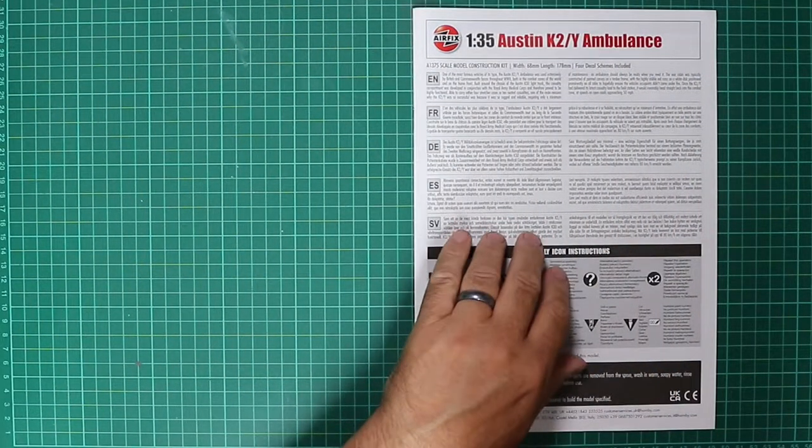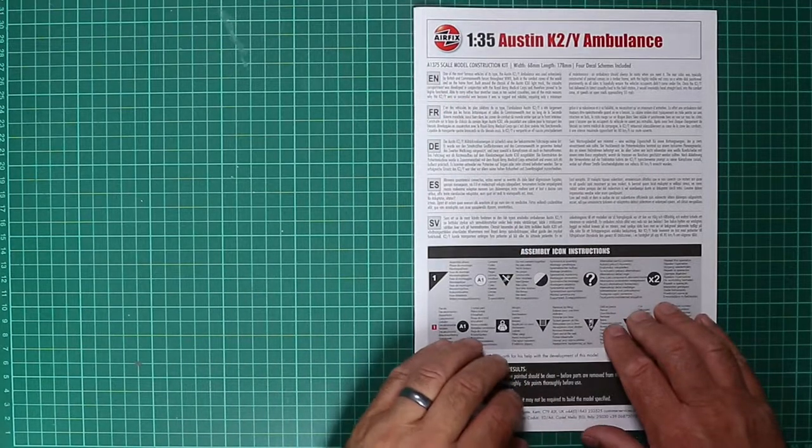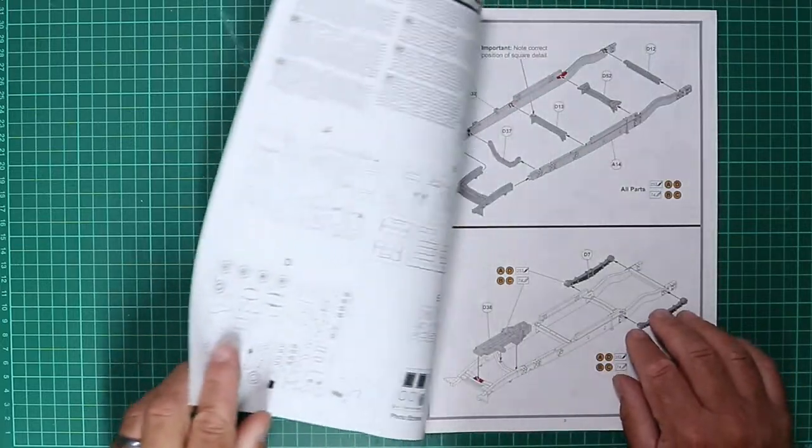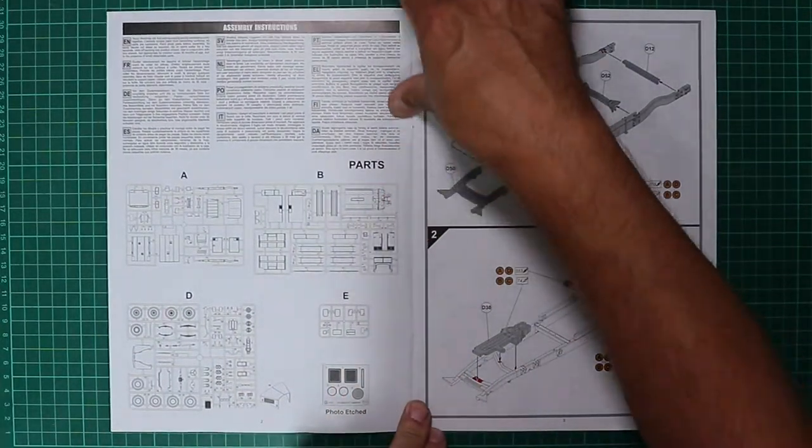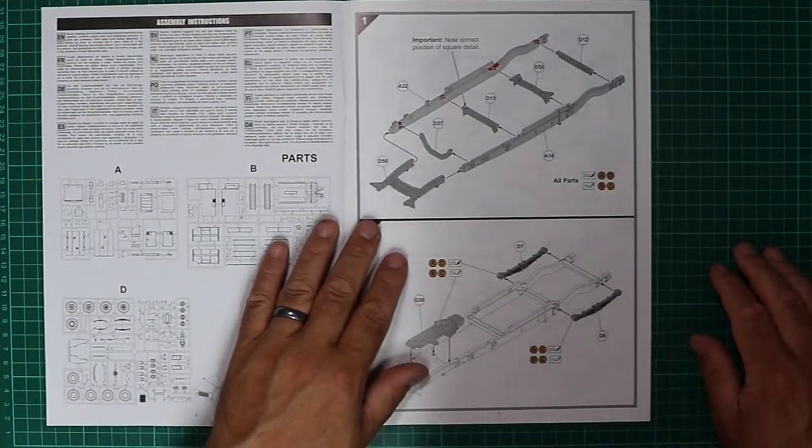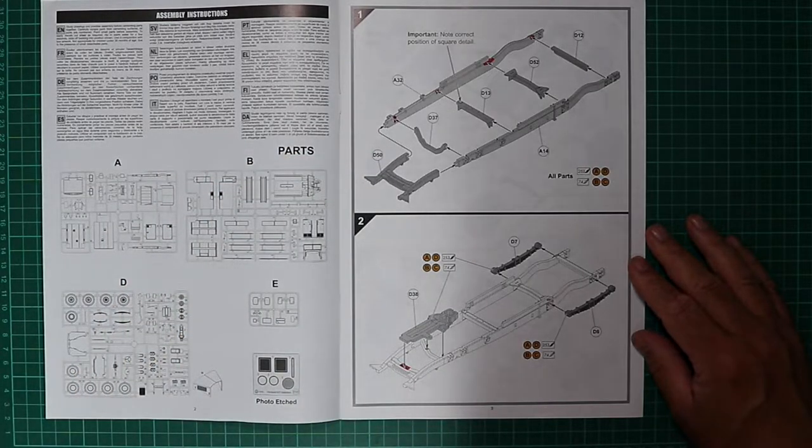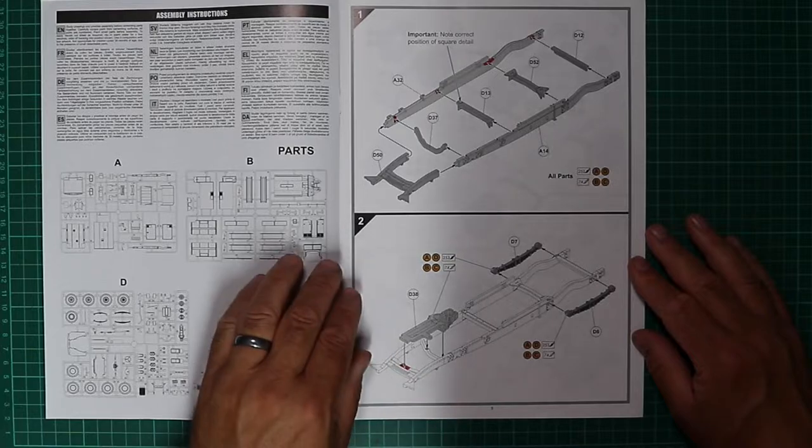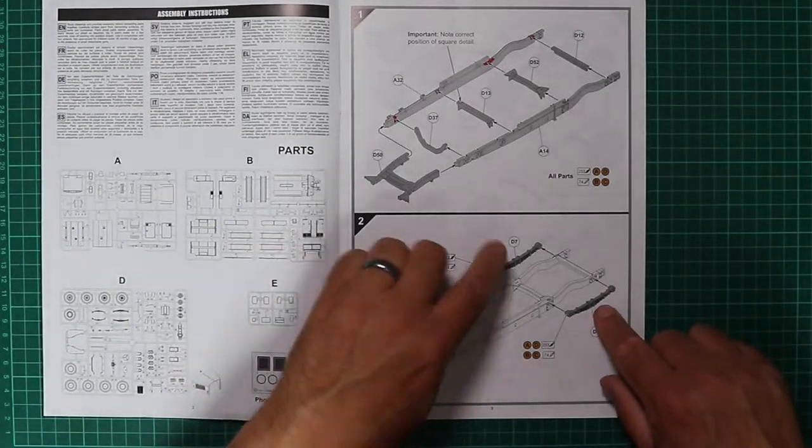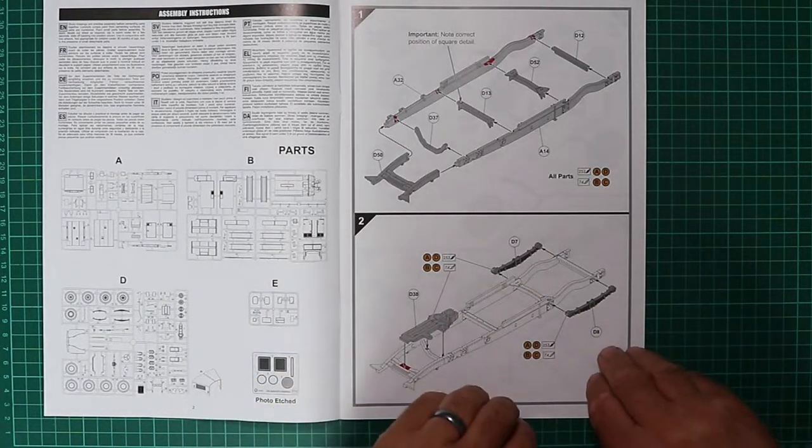We have the A4 glossy papered instruction booklet, usual blurb about the type on the front just repeated from the side of the box there. Opening the page we are greeted with the parts map and assembly commences with the chassis ladder. Please bear in mind I'm an aircraft modeler not a vehicle modeler, so if I'm using some of the terminology that's incorrect please forgive me. Leaf springs building up this chassis and we've got a depiction of the engine there as well.